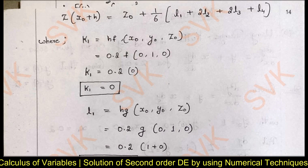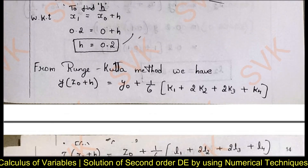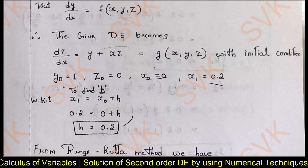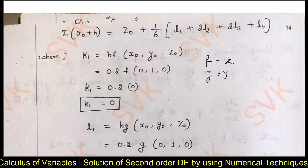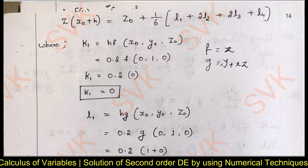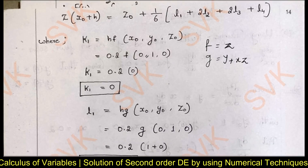k₁ is given by h·f(x₀, y₀, z₀). Note that f is always z, and g is defined as y + xz. So k₁ = 0.2·f(0, 1, 0). Since z₀ = 0, substituting gives 0.2 × 0 = 0.